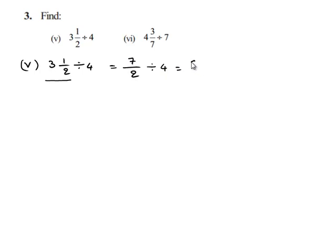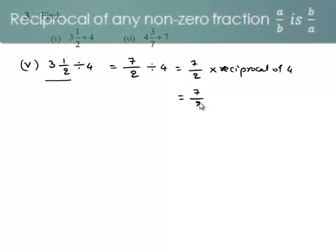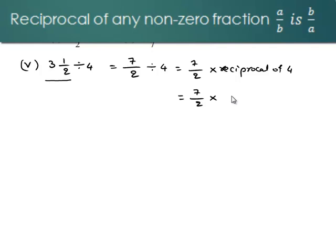This is equal to 7 upon 2 divided by 4, which can be written as multiplied by the reciprocal of 4. This is equal to 7 upon 2 multiplied by 1 upon 4.